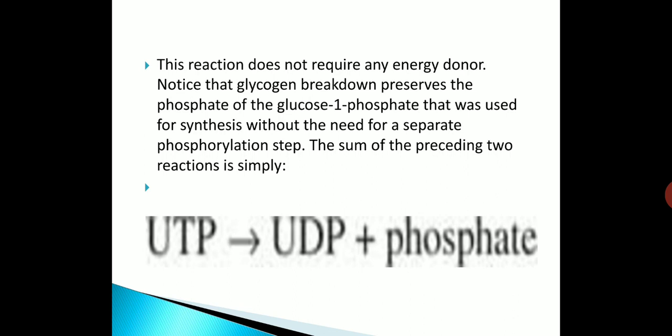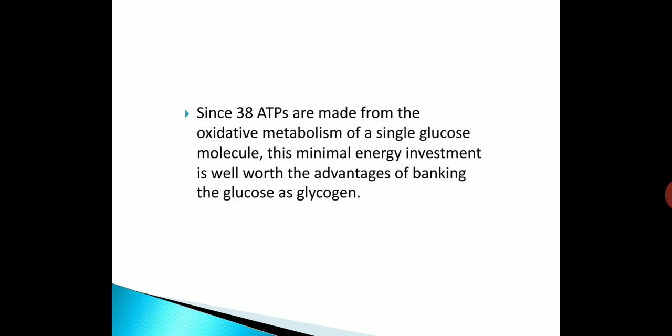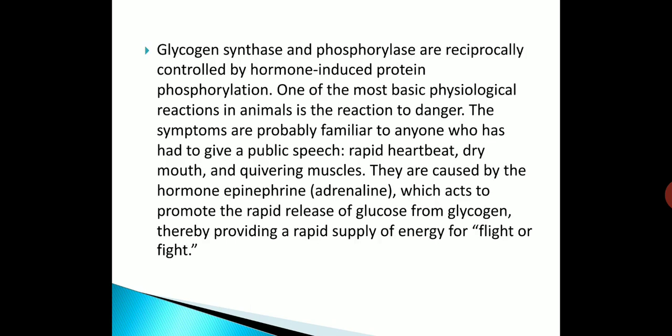Glycogen breakdown preserves the phosphate of glucose 1-phosphate that was used for synthesis without the need of a separate phosphorylation step. The sum of the two reactions is simply UTP → UDP + phosphate. Since 38 ATPs are made from the oxidative metabolism of a single glucose molecule, this minimal energy investment is well worth the advantages of banking glucose as glycogen.